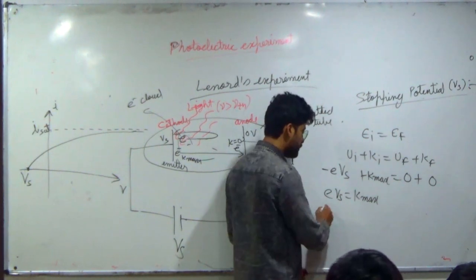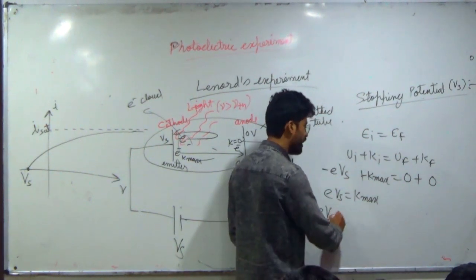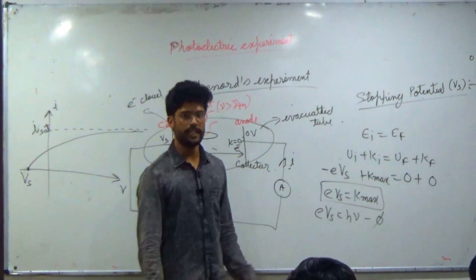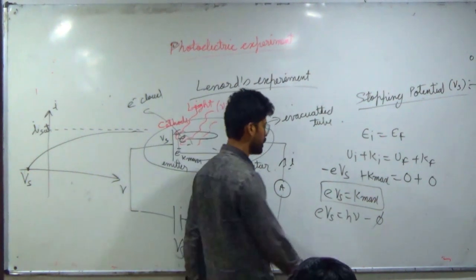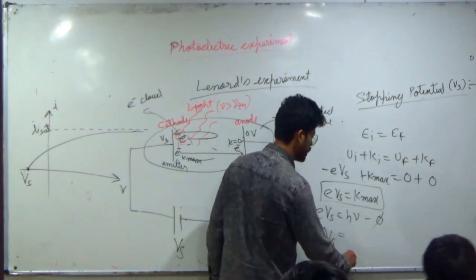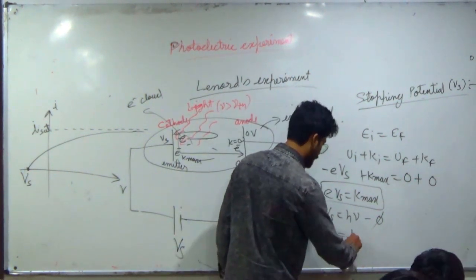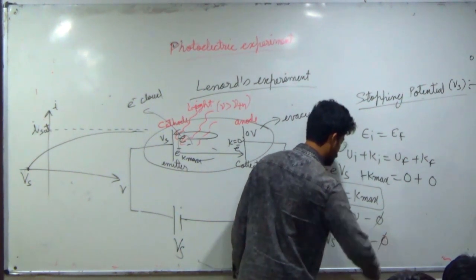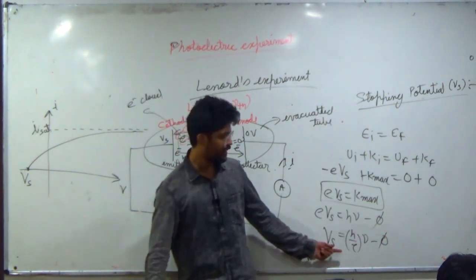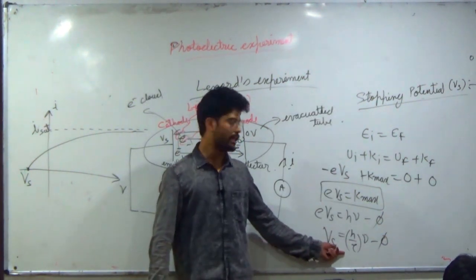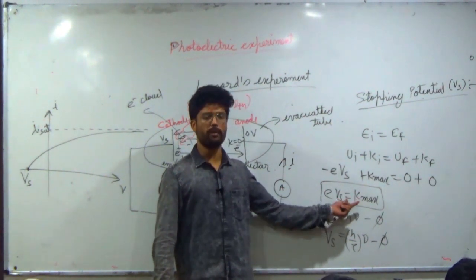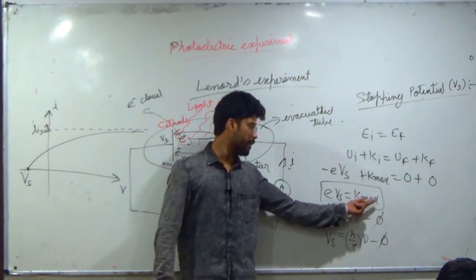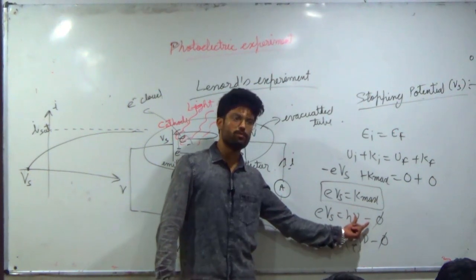So e times Vs equals K max, and K max equals h-nu minus phi. Therefore stopping potential Vs equals (h-nu minus phi) divided by e. Remember: you don't need to memorize ten separate formulas — just remember that stopping potential corresponds to maximum kinetic energy, and K max equals h-nu minus phi.